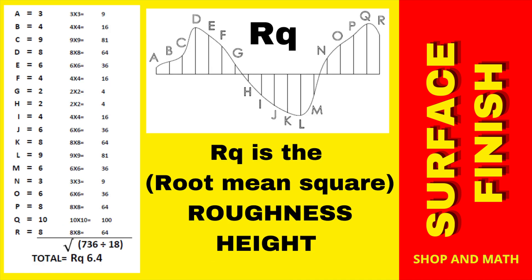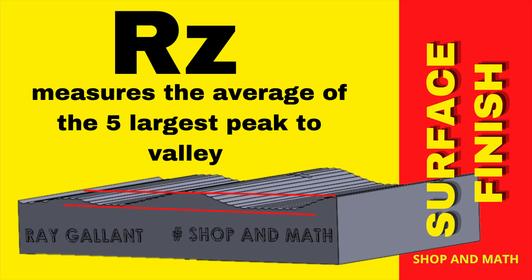RQ is the root mean square roughness height. Just like with RA, we have 18 lengths. What we do is square each length, total them up, and then take the square root. So for the same measurement where RA was 6, RQ is 6.4. RZ is the measurement of the five largest peaks compared to the five lowest valleys over your sample length.